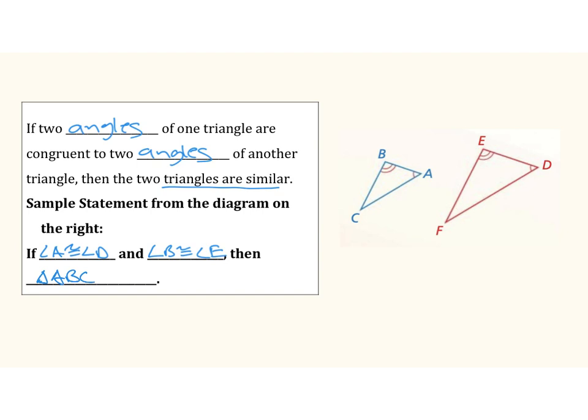I know that angle A and D are similar, so I'm going to start with angle D. Then I know that B and E are similar, so I would say E next, and last but not least, we would have angle F.